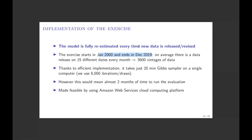For the US alone, that is 3,600 vintages of data. We run this on different versions of the model that incorporate the various innovations one by one. With four different versions of the model times 3,600 vintages, even with a very good sampler taking 20 minutes to run, it would take two months at best. So we use an interface to send computations to AWS, and in the space of a few hours we have all results back.